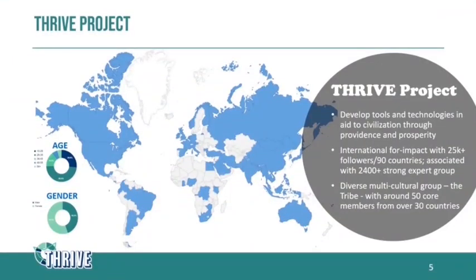From humble beginnings, we have grown into a worldwide think tank, research institute, publishing house, and advocacy group. We're more than just an organization or community — we're a worldwide movement aligning humanity back onto the path to thrivability. We develop tools and technologies in aid of civilization, providing providence and prosperity. We are international, with tens of thousands of followers in almost 100 countries and affiliated with over 2,400 experts and seminal authors. We are diverse and multicultural, with a core member group of around 50–60 people from about 30 different countries.